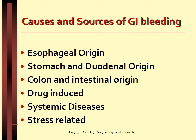Upper GI bleeds usually have an esophageal, stomach, or duodenal origin. Inflammatory diseases in the colon and ileum, like diverticulitis, Crohn's, and ulcerative colitis, can also cause bleeding. Drugs, alcohol, and cigarette smoking can cause inflammation, vasodilation, and bleeding. Systemic diseases involving the liver, portal hypertension, and cardiac diseases can also cause GI bleed. Stress related to extensive burns causing Curling's ulcer or other trauma is another cause.